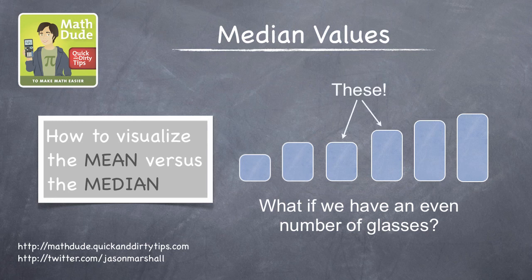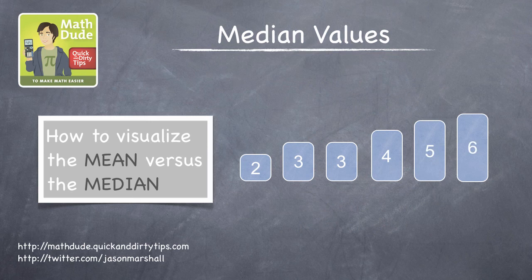Imagine the heights of water in the six glasses is 2, 3, 3, 4, 5, and 6. These are already ordered from lowest to highest, very convenient, so the median value is the mean of the two middle numbers, 3 and 4. This mean is 3.5, which is therefore also the median height of water in the six glasses.